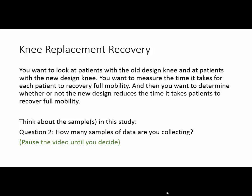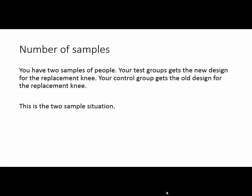The next question: how many samples of data are we collecting? Think about the way we described what we're doing, and answer this question. In this case, we have two samples of people — those getting the newly designed knee, and those getting the older design. Our test group would get the new design; our control group would get the old design. So we definitely have a two-sample situation. It is not two-sample special because there is no link or connection between the people getting the new knee and the people getting the old knee.